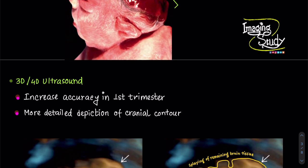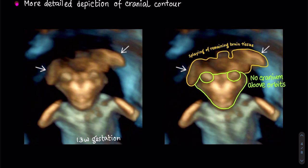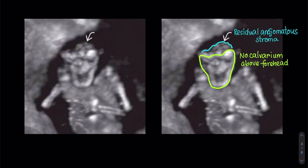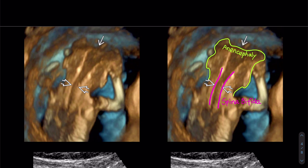3D and 4D ultrasound may potentially increase the diagnostic accuracy in the first trimester and help in more detailed depiction of cranial contour. This 3D surface reconstruction of a 13-week fetus with exencephaly shows no cranium and splaying of remaining brain tissue above the orbits. A 3D image of an early mid-trimester fetus with anencephaly shows complete absence of the calvarium above the forehead with a small amount of residual angiomatous stroma. A 3D image of a first trimester fetus shows not only anencephaly but also an extensive open neural tube defect of the cervical spine.